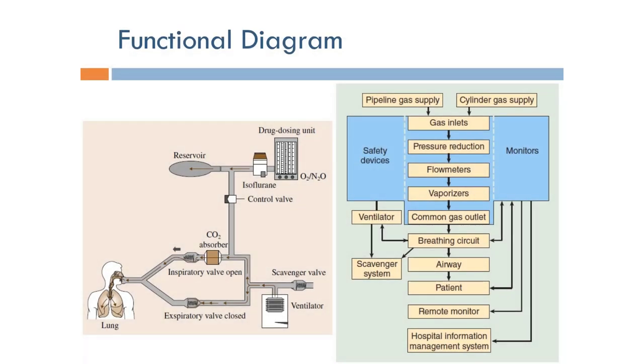The functional diagram of the anesthesia machine starts with the input gas supplies, which can come from cylinders or from the central gas supply from the hospital. These go through gas inlets and must contain oxygen.